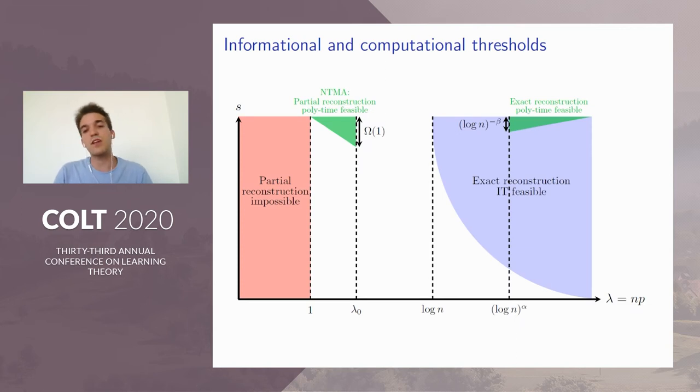We cannot hope for the exact recovery of sigma because of the information theoretical threshold. The problem we addressed is that of partial polynomial time recovery of sigma. The objective is relaxed. We want to find a one-to-one mapping, not necessarily a bijection, such that the overlap with the true planted one sigma, defined in terms of the fraction of correctly matched nodes, is positive, and we want the fraction of incorrectly matched nodes to vanish when n tends to infinity. We can sum up these results in the following diagram in s and lambda, with lambda equals np. This blue area is the zone where exact reconstruction is feasible without computational time constraints. The upright green triangle is the state-of-the-art situation for polynomial time feasibility of exact reconstruction.